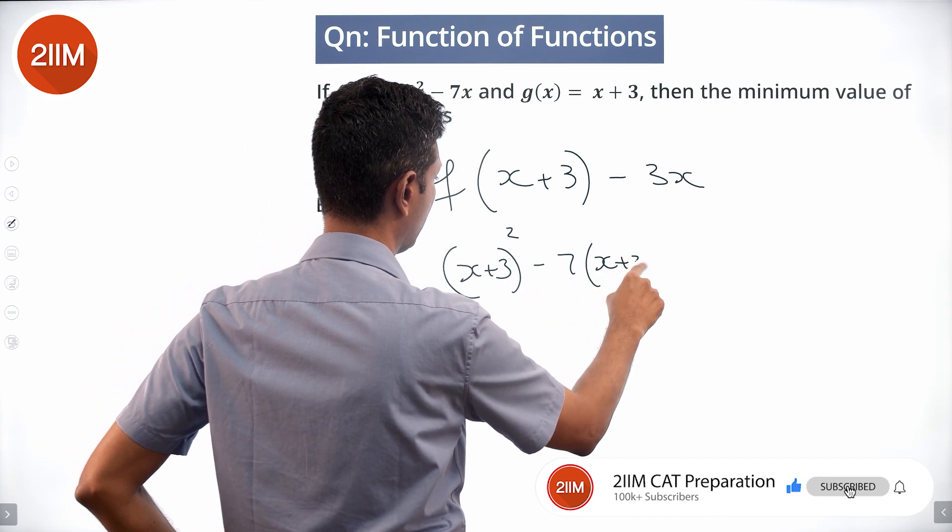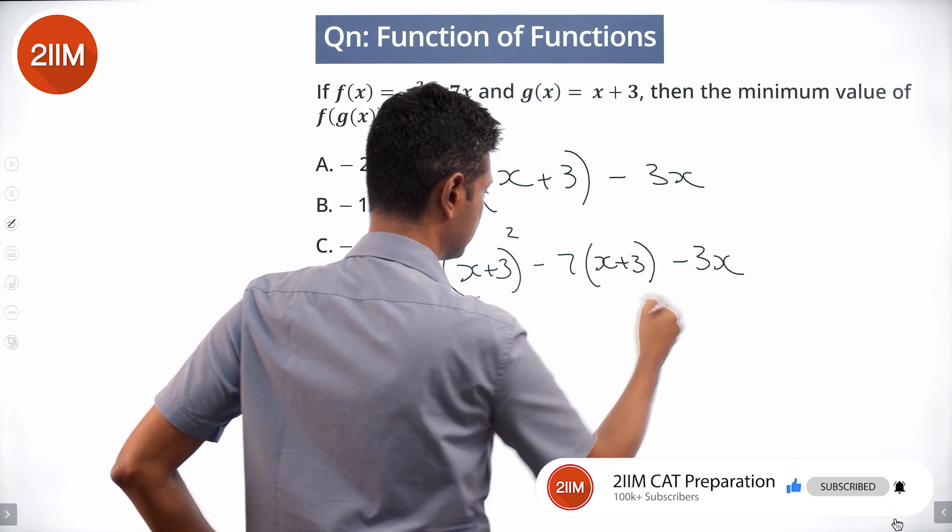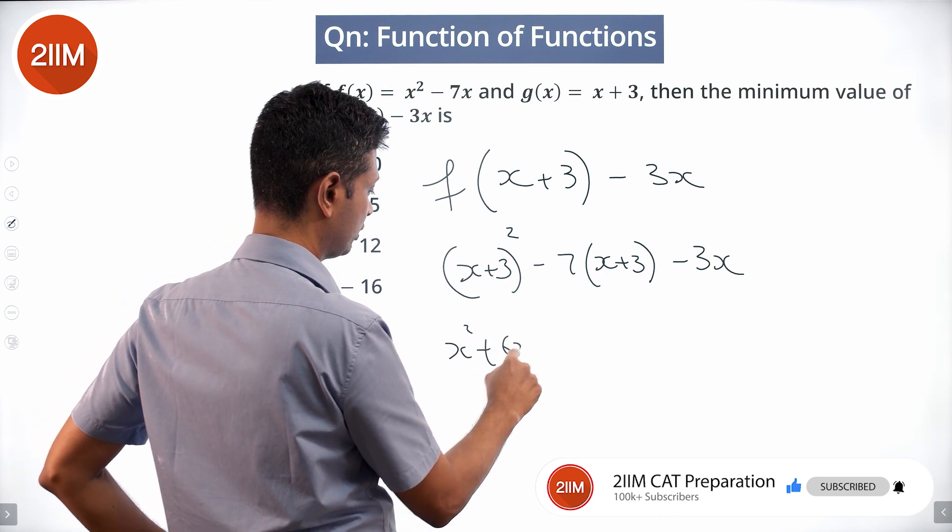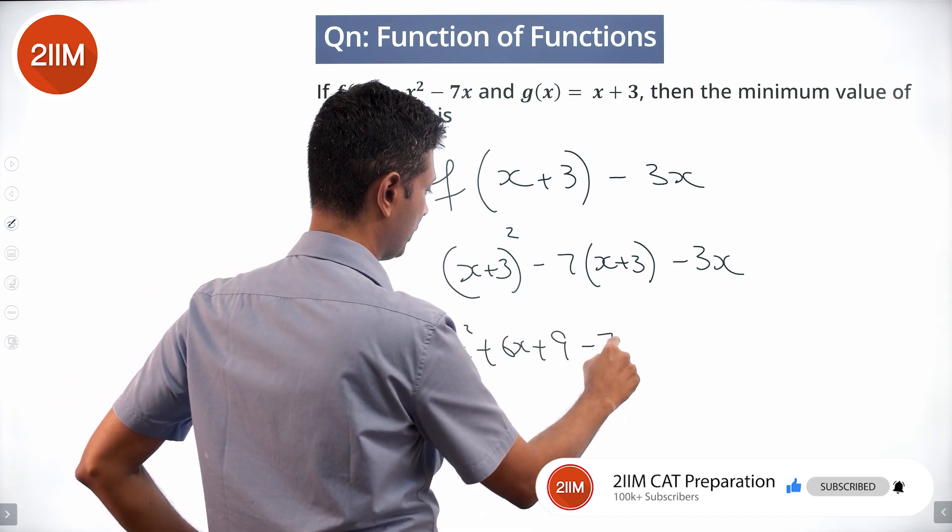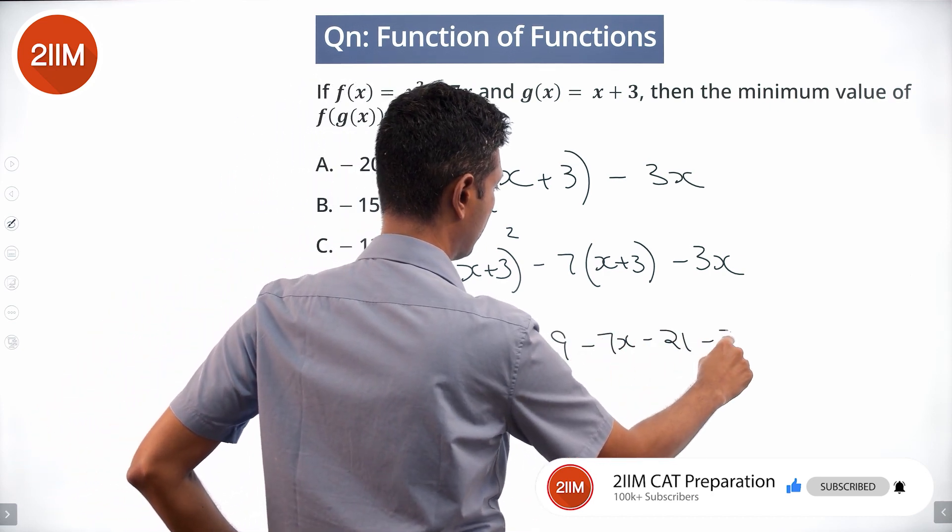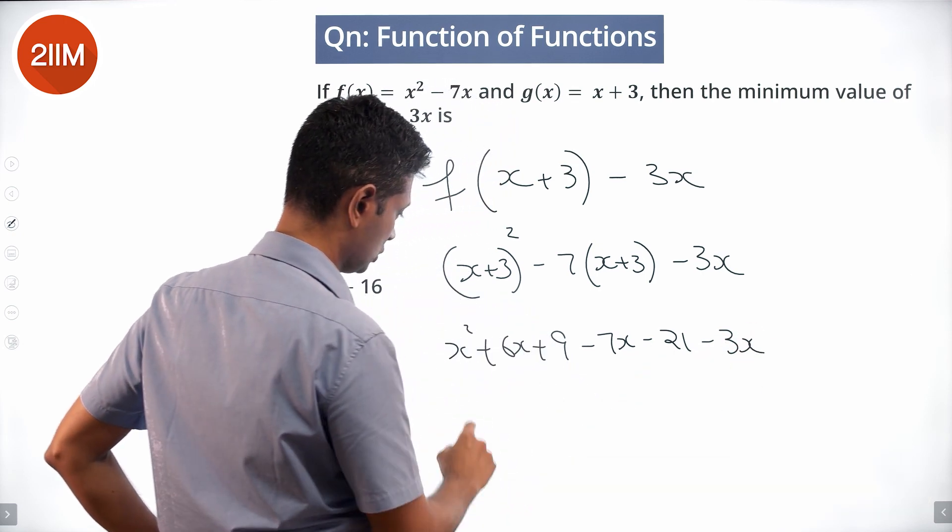7 times x plus 3 minus 3x. Let's find this: x squared plus 6x plus 9 minus 7x minus 21 minus 3x. This is x squared